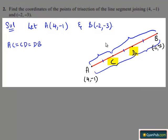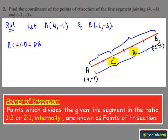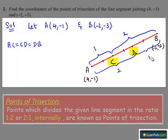It is clearly seen that C divides AB in the ratio 1:2 internally, and D divides AB in the ratio 2:1 internally.